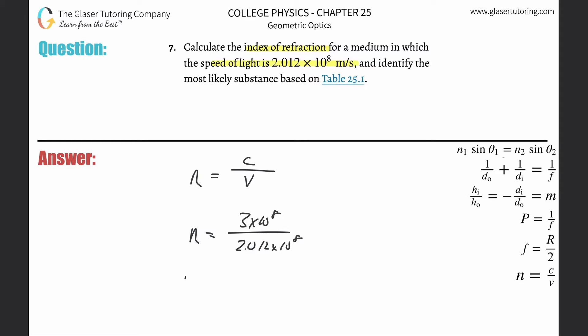So all you got to do is now throw this on into the calculator and see what the index of refraction is. It's just a ratio. So 3 divided by 2.012 basically because the times 10 to the 8 would cancel. This is about 1.49.